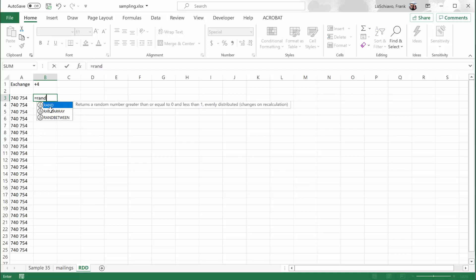We can type in equals RAND BETWEEN, open up the parentheses, type in the smallest four-digit number that we want, 0000.